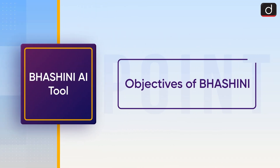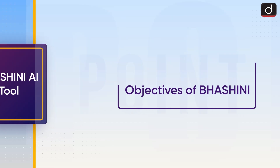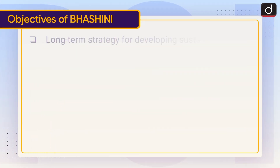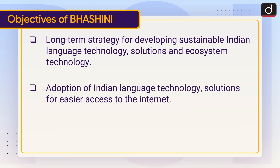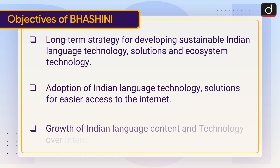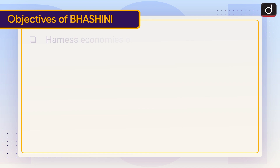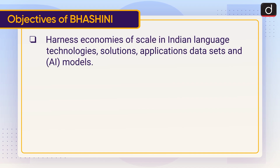Now let's talk about the objectives of Bhashani: a long-term strategy for developing sustainable Indian language technology solutions and ecosystem; technology adoption of Indian language technology solutions for easier access to the internet; growth of Indian language content and technology over the internet; and to harness economies of scale in Indian language technologies, solutions, applications, datasets, and AI models.